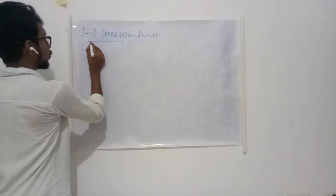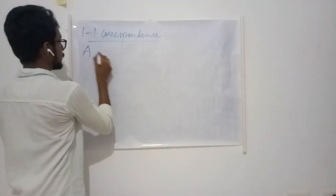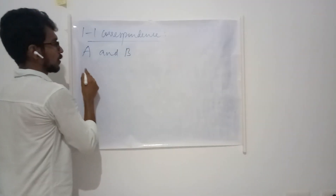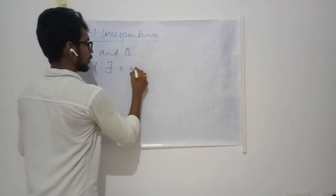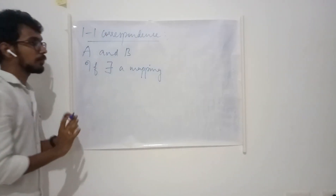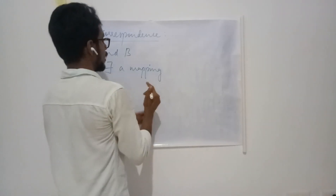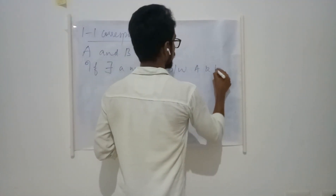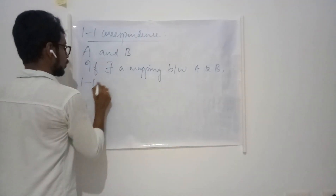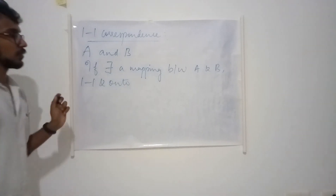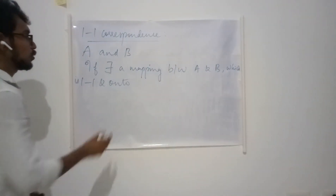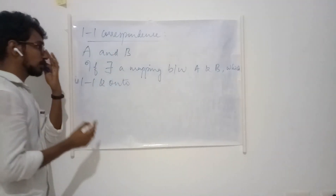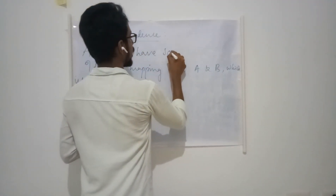The next definition is one-to-one correspondence. Two sets A and B are said to be in one-to-one correspondence if there exists a mapping between A and B which is both one-to-one and onto. If such a mapping exists, these two sets are said to be in one-to-one correspondence, or they have the same cardinal number.